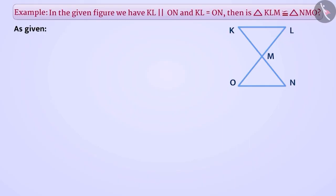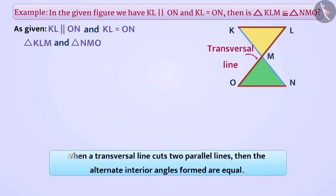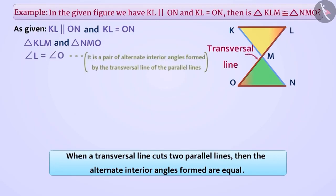We have been given that KL and ON are parallel and KL is equal to ON. We observe that line segment KL is parallel to line segment ON, and we can consider OL as the transversal of both. When a transversal line cuts two parallel lines, the alternate interior angles formed are equal. Here, angle L is equal to angle O because it is a pair of alternate interior angles formed by the transversal line of the parallel lines.